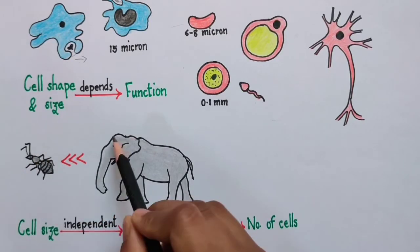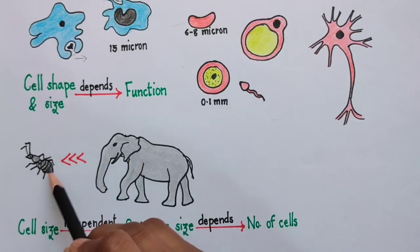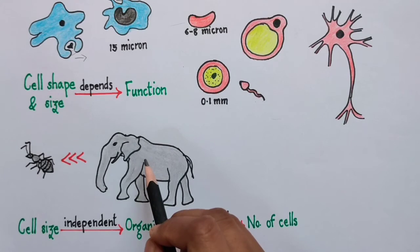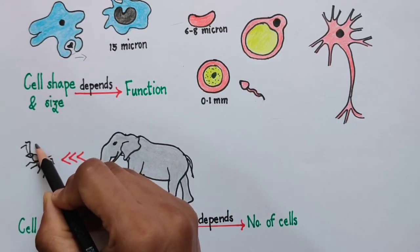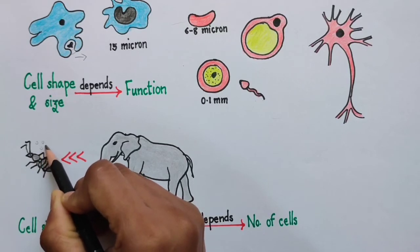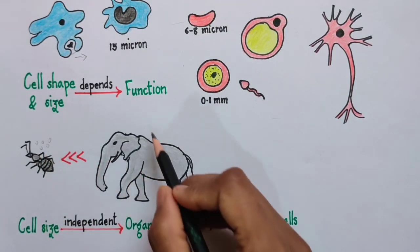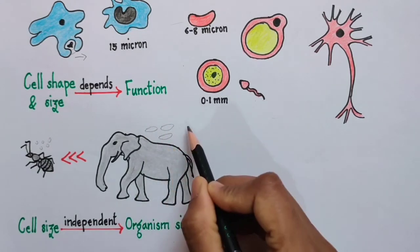Here I have drawn an ant and an elephant. The two differ largely in their body size. Now does this mean that the ant, since it is very small, is going to have small cells, and elephant, since it is very huge, is going to have big cells? The answer is no.